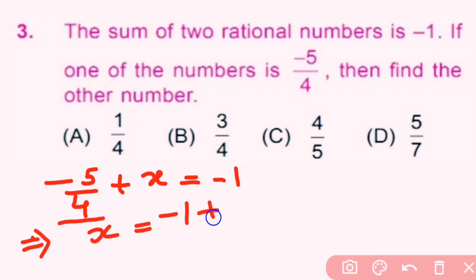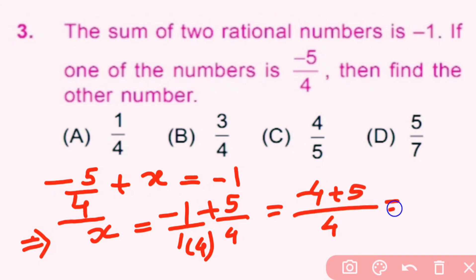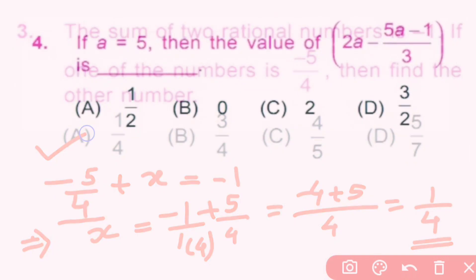The denominators are not equal so we multiply −1 by 4 to get −4/4. Then x = (−4 + 5)/4 = 1/4. So the answer is 1/4, and option A is correct.